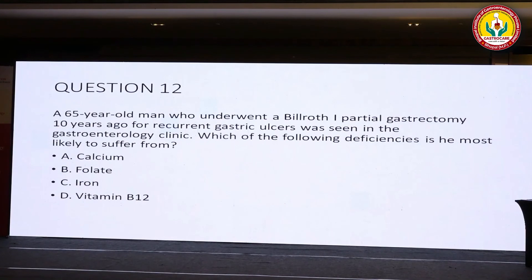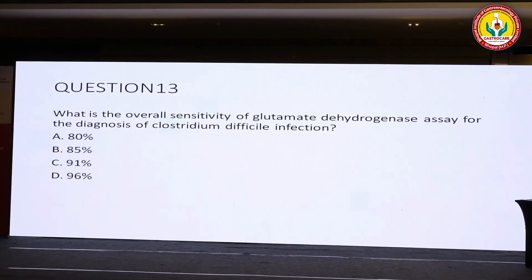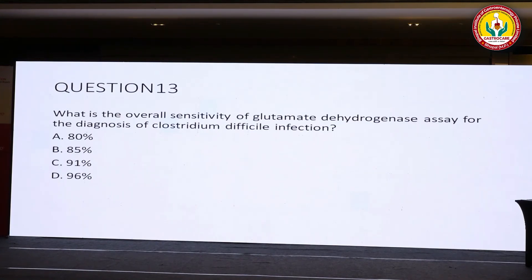Question 12: what is the overall sensitivity of the glutamate dehydrogenase (GDH) assay used for the diagnosis of Clostridioides difficile infection? Option A: 80%. Option B: 85%. Option C: 91%. Option D: 96%. What is the sensitivity of this assay for the diagnosis of C. difficile infection?